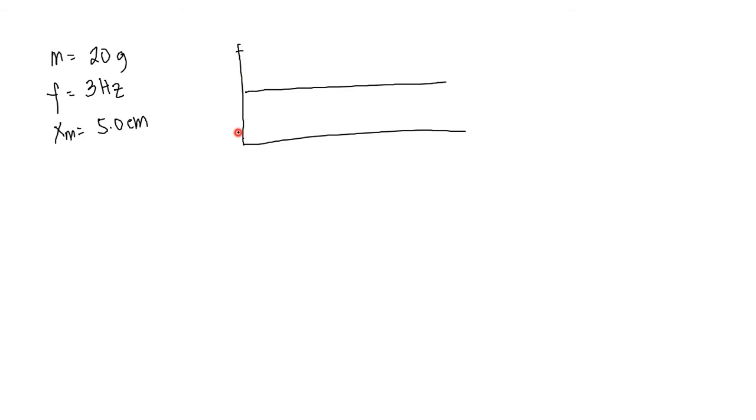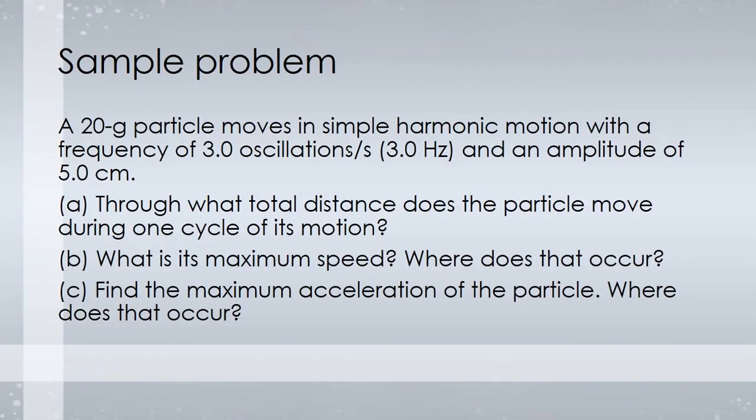So x sub m, then this is negative x sub m, x sub m, negative. From this point it moves like this, then it goes up, then back. Okay? This is one oscillation. But of course in one second, it completes three oscillations. But let's just analyze one first. So let's answer question A, total distance does the particle move in one cycle of its motion?